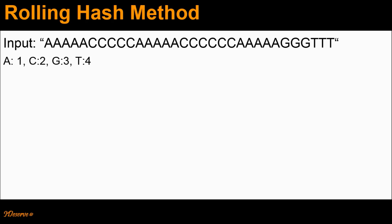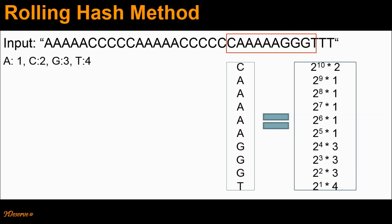Let's try to understand how we can compute these hash values. Consider this example. The first letter C has been assigned a weight of 2^10, then the second letter A has been assigned a weight of 2^9, and so on until the last letter T which has been assigned a weight of 2^1. The weights are multiplied with the corresponding values of that character. For example, C has a value of 2, therefore we do 2^10 × 2, plus 2^9 × 1 where 1 is the value of character A, plus 2^8 × 1 where 1 is again the value of character A.